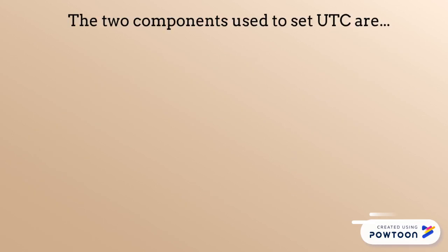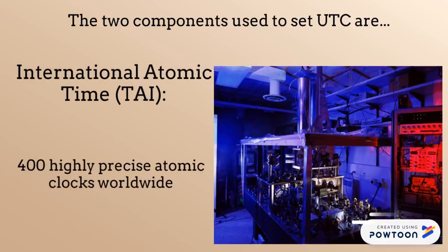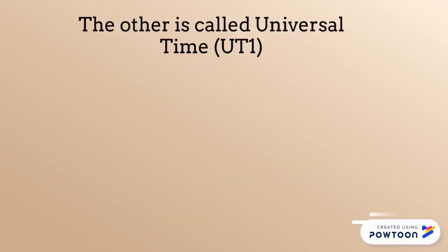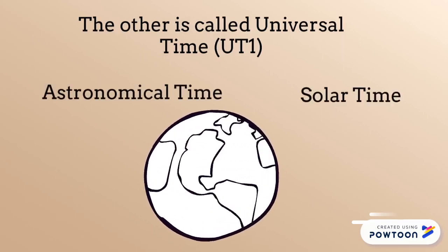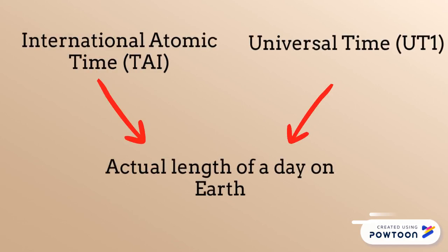The two components used to set UTC are the International Atomic Time, which combines the output of some 400 highly precise atomic clocks worldwide and provides the exact speed our clocks should tick. The other is called Universal Time, also known as Astronomical Time or Solar Time, and it refers to the Earth's rotation. This is used to compare the pace provided by the International Atomic Time with the actual length of a day on Earth.